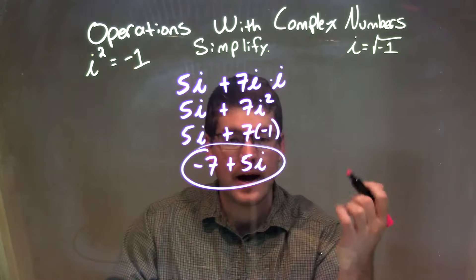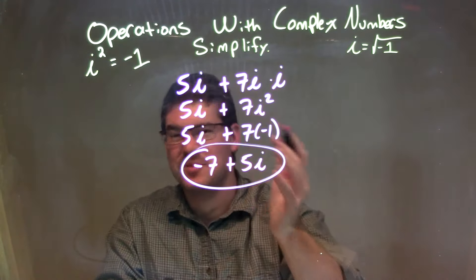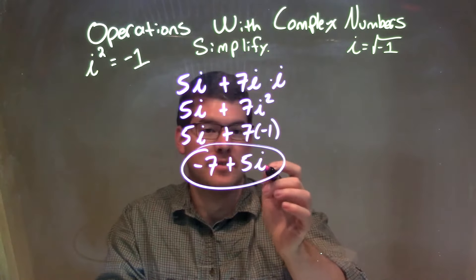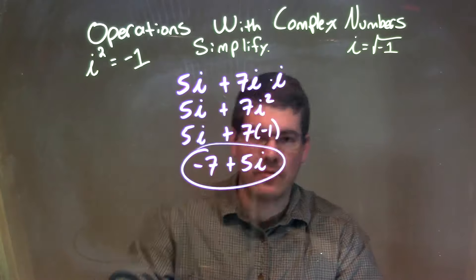But when writing complex numbers, that negative 7 comes out front. So we have negative 7 plus what was there, which we didn't really do anything with, which is 5i, giving me my final answer, negative 7 plus 5i.